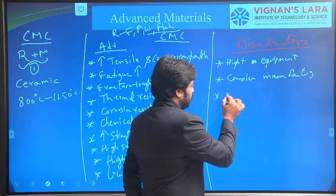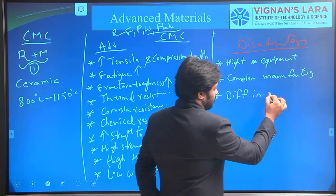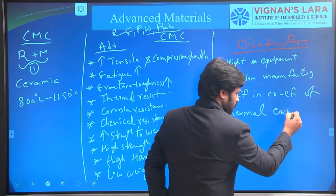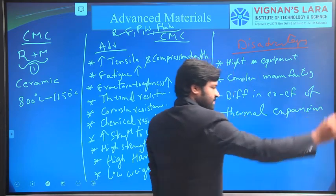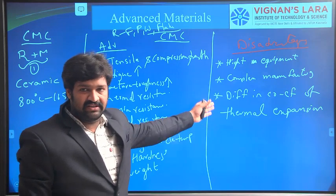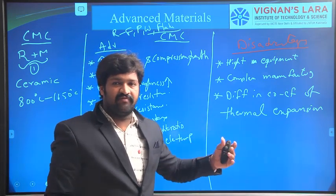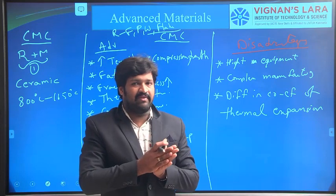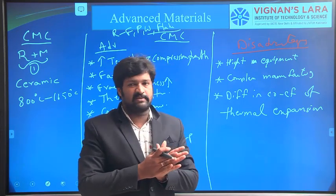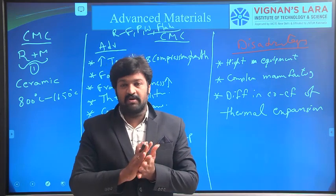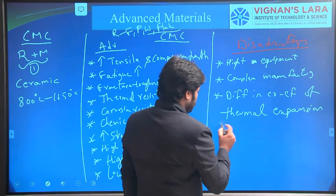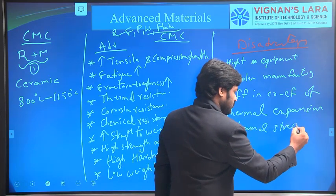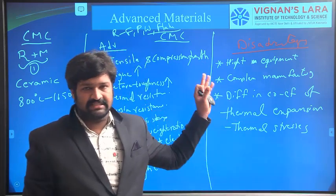The main disadvantage is the difference in coefficient of thermal expansion. The matrix material and the reinforcement have different coefficients of thermal expansion, so they do not expand uniformly. Due to this difference, some amount of thermal stresses are generated internally. These thermal stresses are a key disadvantage of ceramic matrix composites.